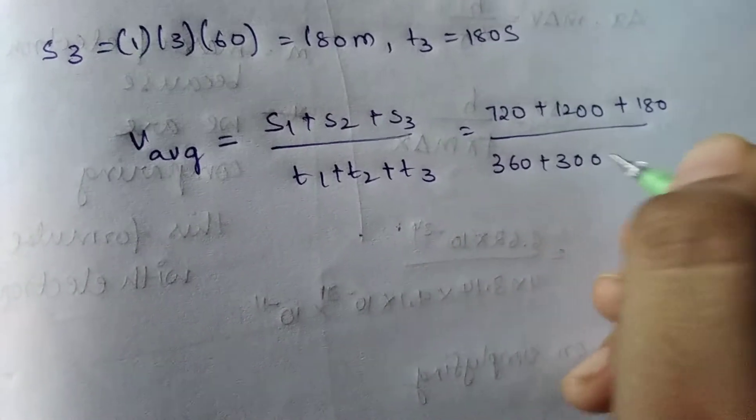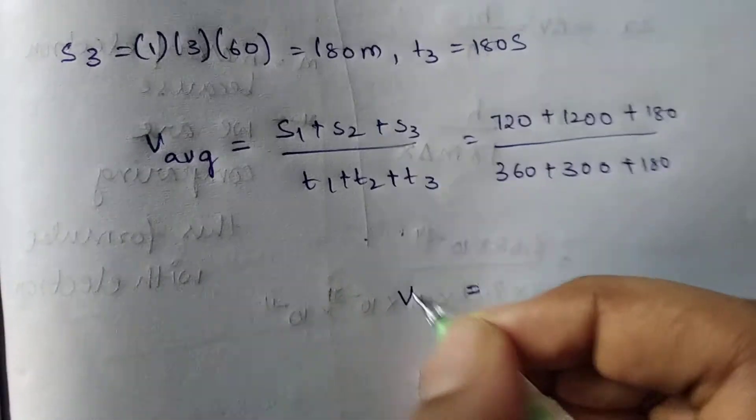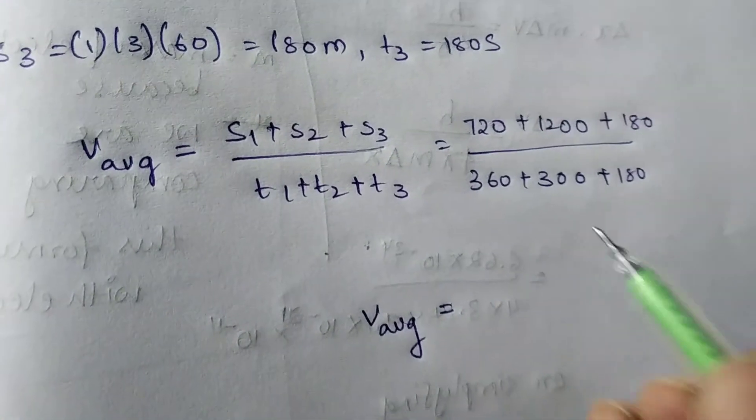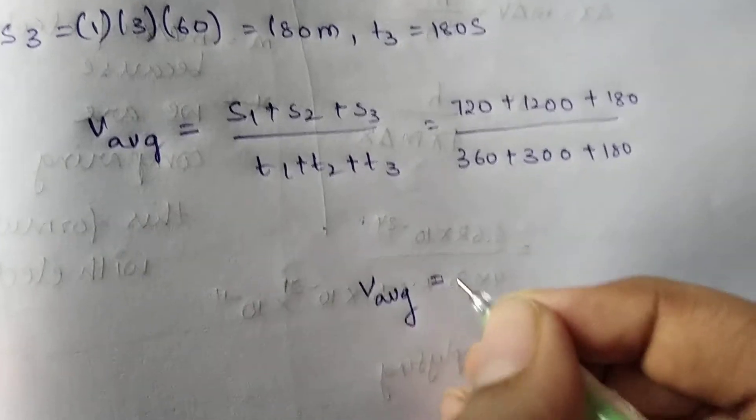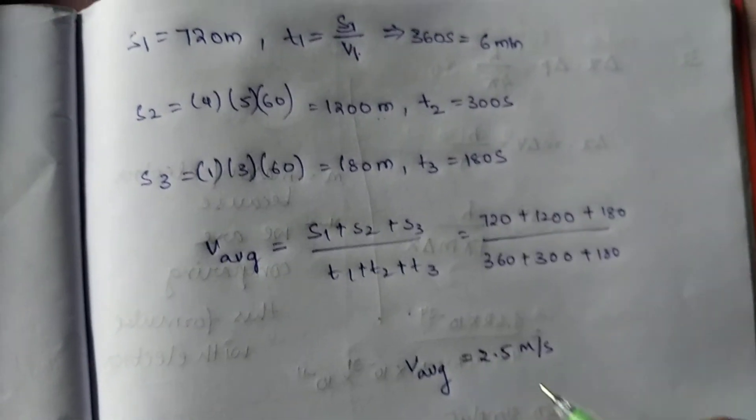Now I'm finally calculating it. I'm pausing the video if you want you can calculate this. So we finally get 2.5 meters per second. The average speed equals 2.5 meters per second.